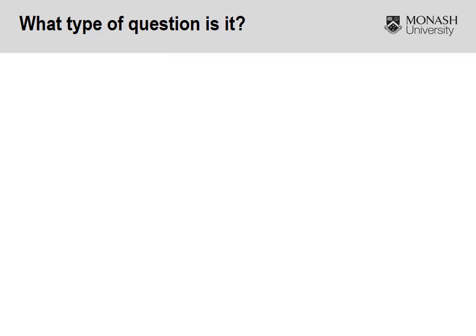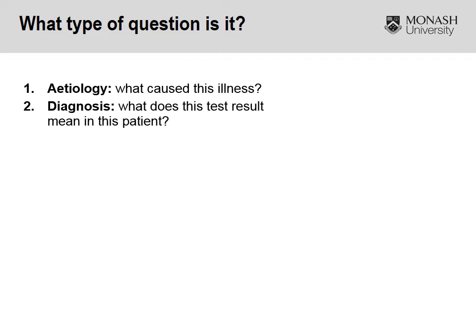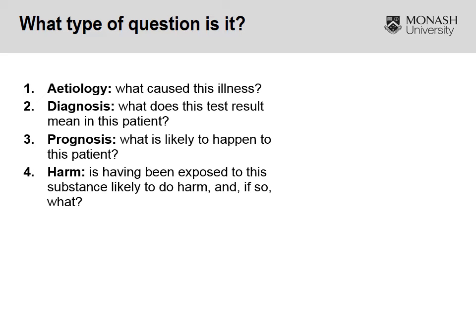Before we go through the biases to look out for when critically appraising, I thought we would review the six main questions that we often ask in evidence-based practice. The first one is around etiology — that is, what caused the disease. The second is around diagnosis, where we want to identify the effectiveness or accuracy of the diagnostic test itself. Third is prognosis: what is likely to happen to this patient. Fourth is around harm, focusing on risk factors and whether exposure to a particular risk increases the likelihood of a particular outcome.